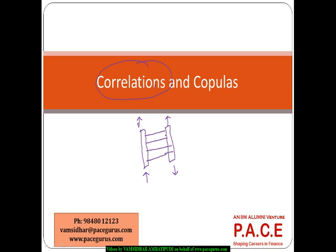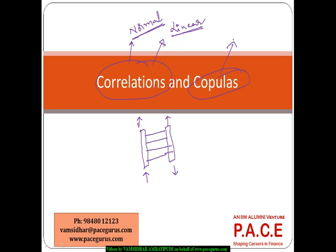The dependence structure between variables is very heavily explained by the concept of correlation. Correlation as a process is more effective when looking at the linear dependency between variables. Generally, correlation is much more effective if the variables are more or less normal in nature. But if variables follow any other kind of distribution, and I am trying to find out the dependence structure between them, I classify them as copulas.